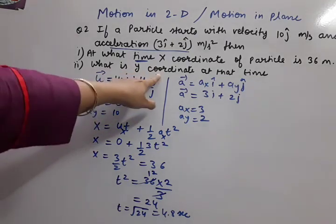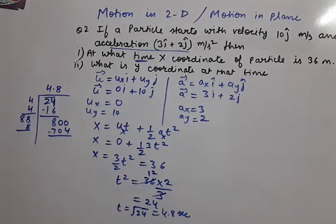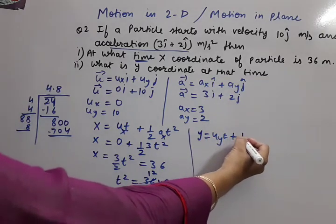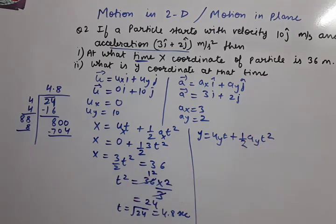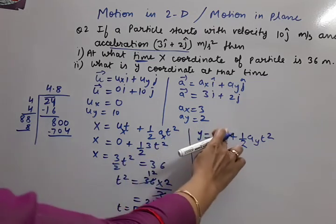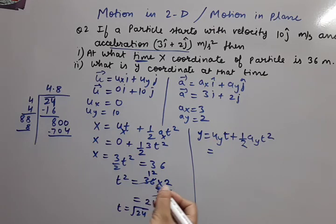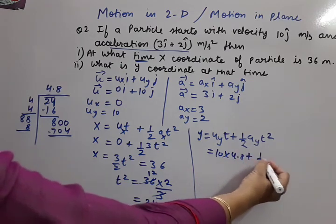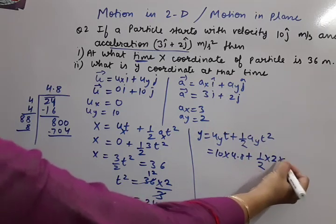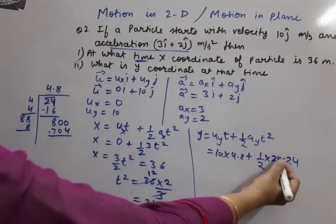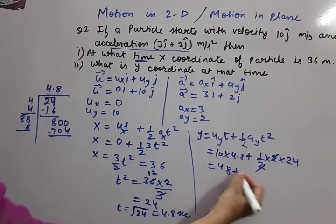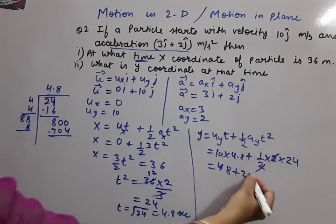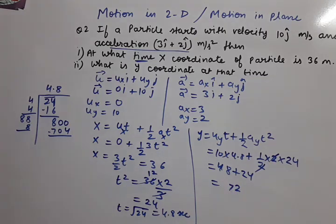The next part asks: what is the y-coordinate at that time? We use y = uyt + ½ayt². Substituting uy = 10, t = 4.8, ay = 2, t² = 24: y = 10 × 4.8 + ½ × 2 × 24 = 48 + 24 = 72 meters. So the y-coordinate at that time is 72 meters.